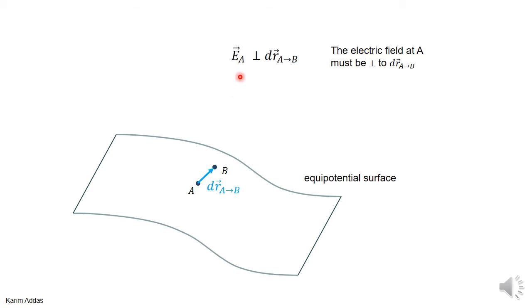Since the dot product is zero, and the magnitude of E is not zero, and the magnitude of dr is not zero, then the cosine of the angle between them must be zero. If cosine of the angle is zero, the angle between the two vectors has to be 90 degrees. So the electric field vector at a is perpendicular to dr. However, there are many vectors that can be perpendicular to this one particular dr vector, so this doesn't yet give us a fully specific answer.